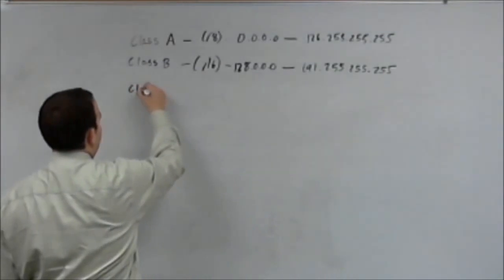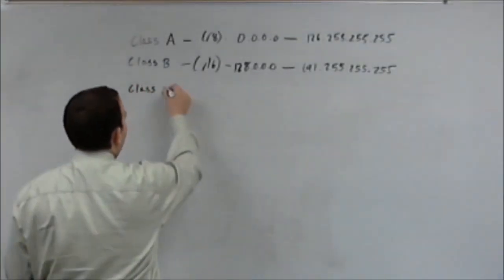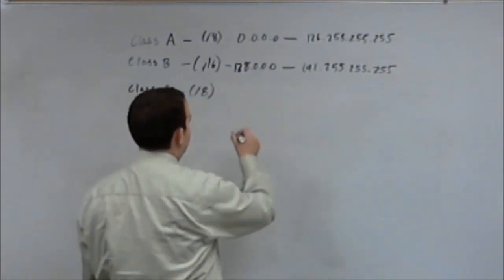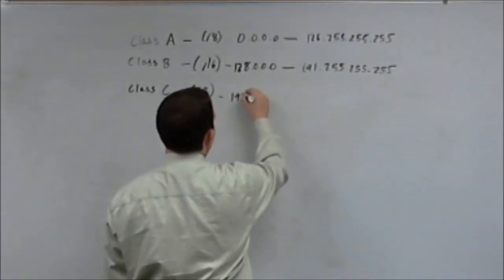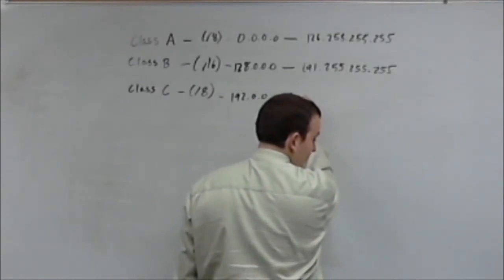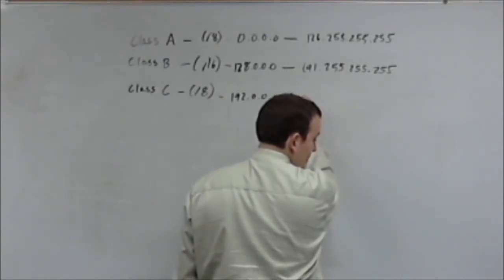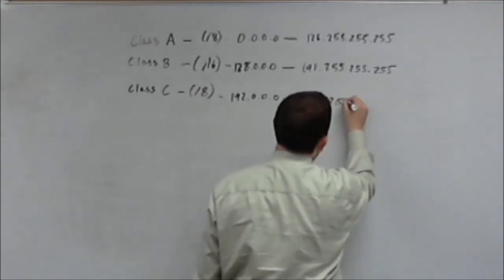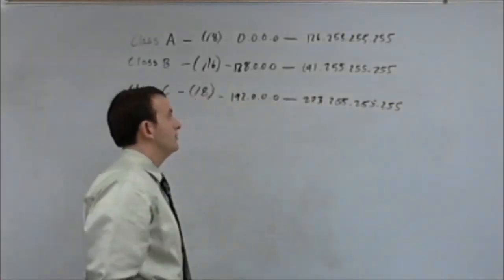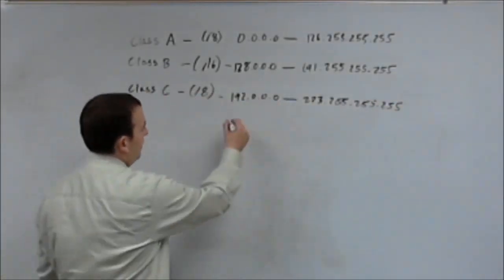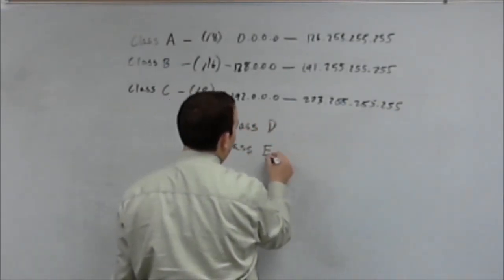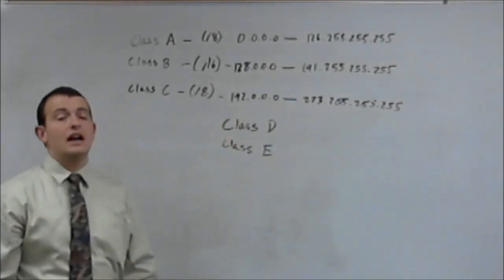Now, last but not least, you've got class C. And this is going to always use a slash 24 subnet mask. And this is going to run from 192.0.0.0 all the way up to 223.255.255.255. And then, of course, we've already in your special IP addresses defined class D and class E IP address ranges.